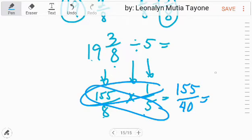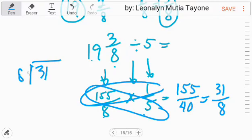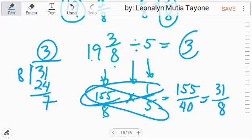So 155 and 40 - their greatest common factor is 5. Divided by 5, this is 31. 40 divided by 5 and that is 8. So 31 divided by 8. 3 times 8 is 24, so 7 remainder. This 3 is the whole number.